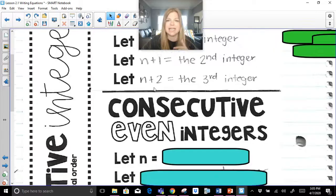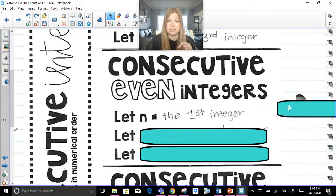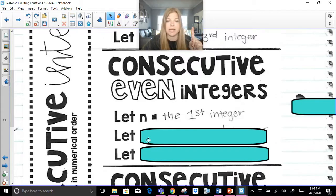Now, next thing we're going to talk about is consecutive even integers. Think of an even number. Think of the next even number that comes after it. How do you go from one even number to the next even number? You add two, right? You don't add by one. So if I let n be the first integer, and it's an even number, let's say 10, the way I go from 10 to 12 is I would add two.